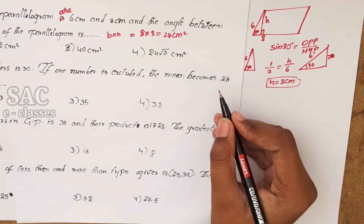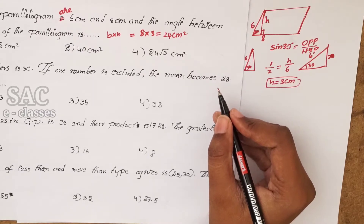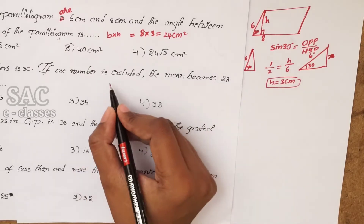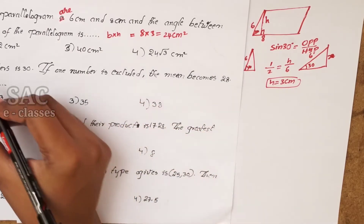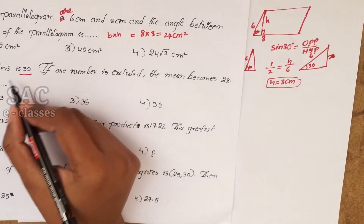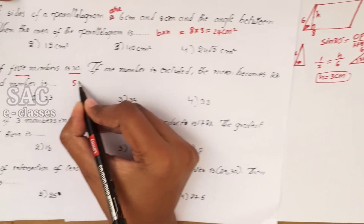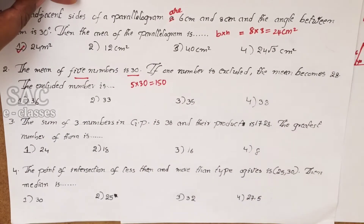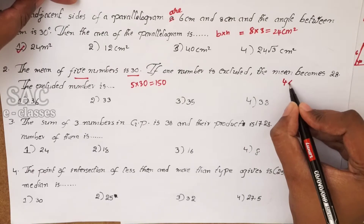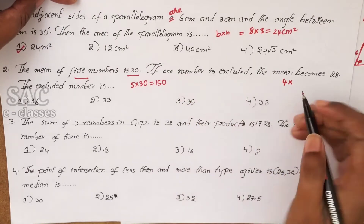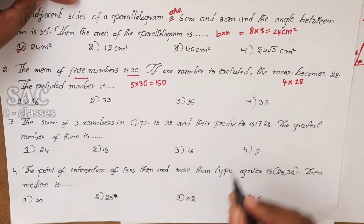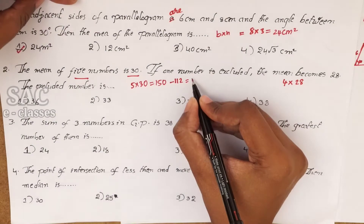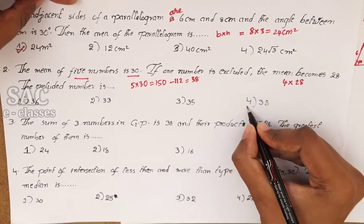Now coming to the second problem. The mean of 5 numbers is 30. One number is excluded and the mean becomes 28. To find the excluded number: the original sum is 5 × 30 = 150. The new sum with 4 numbers is 4 × 28 = 112. So the excluded number is 150 − 112 = 38.